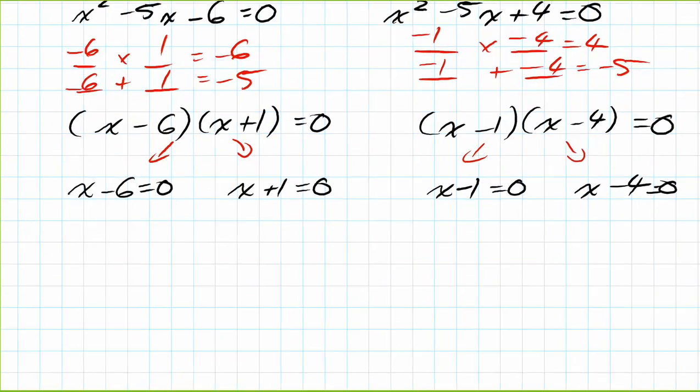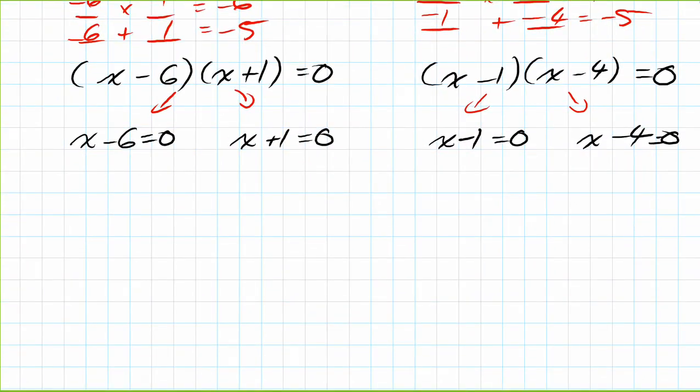Well, we have four answers: we have x = 6, x = -1, x = positive 1, and x = positive 4. So you can write that all something like this: x = ±1, 4, and 6.